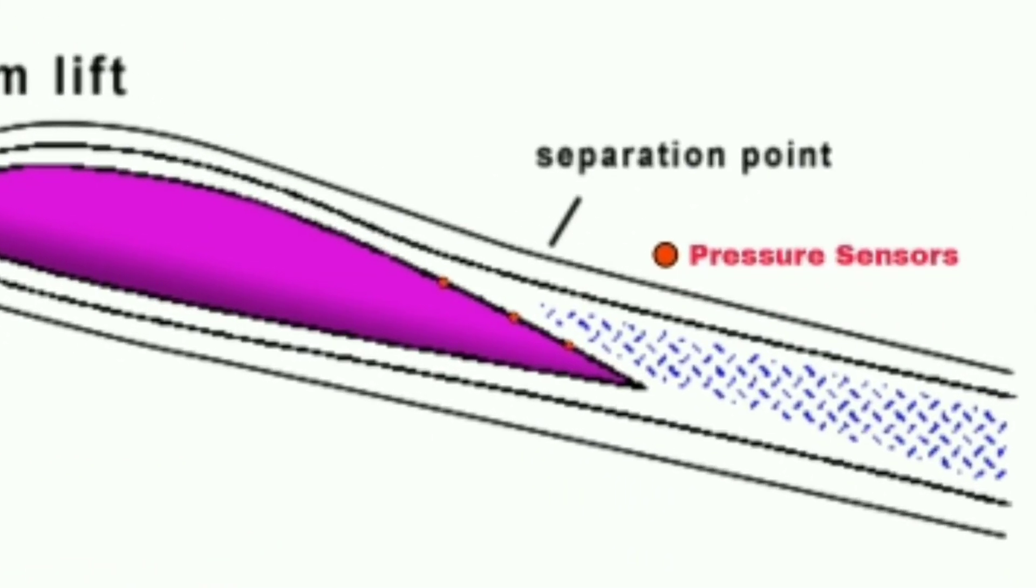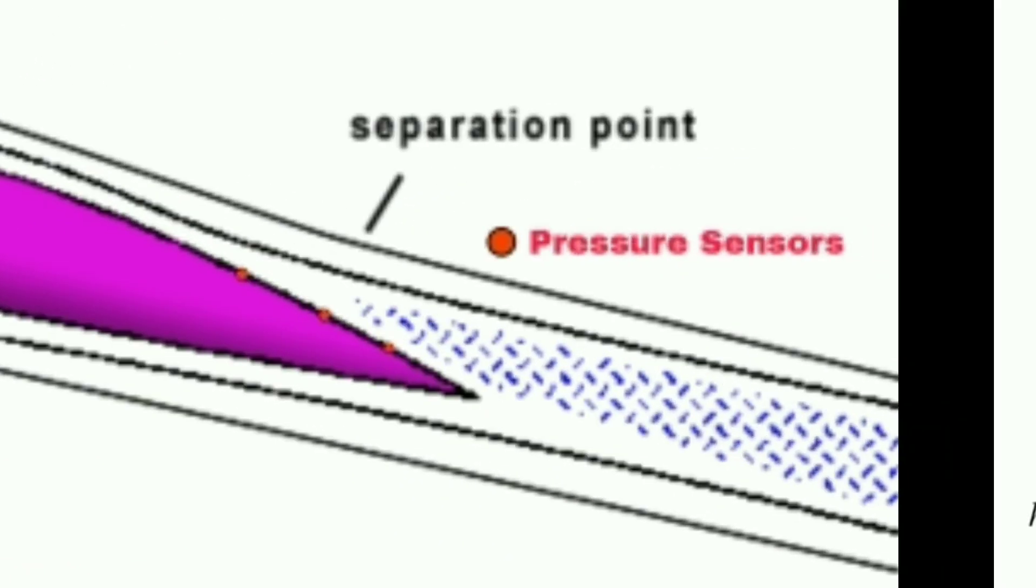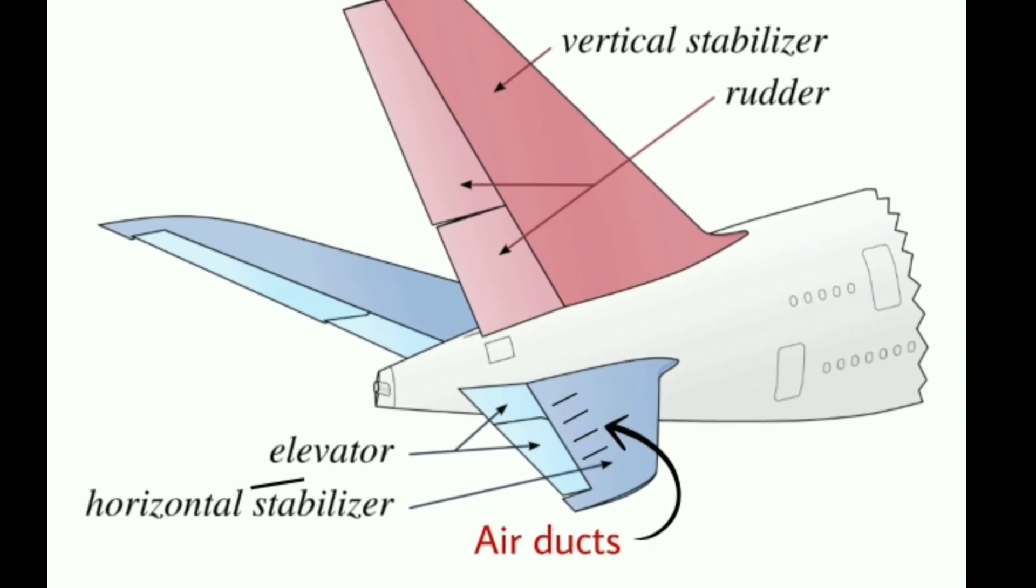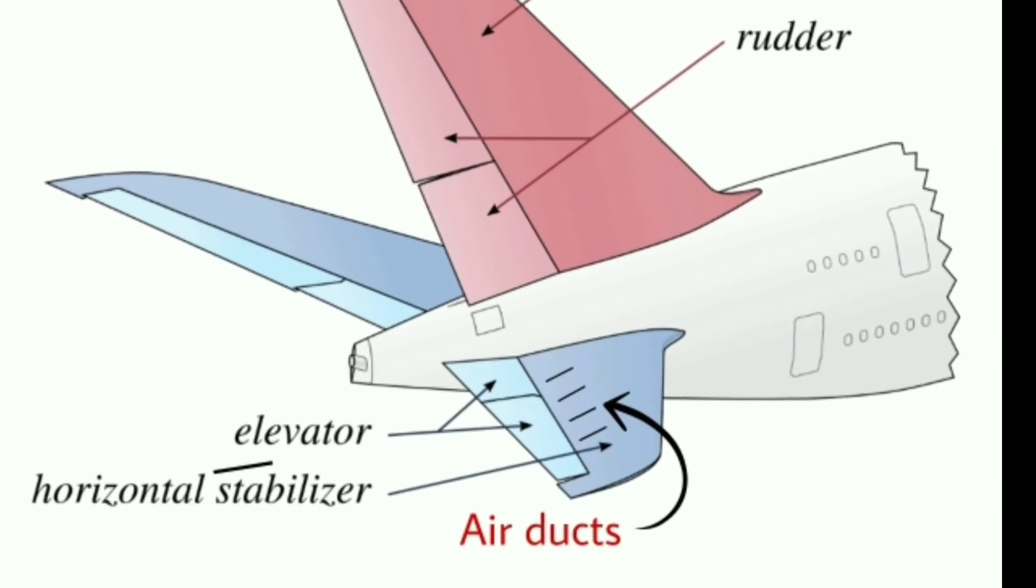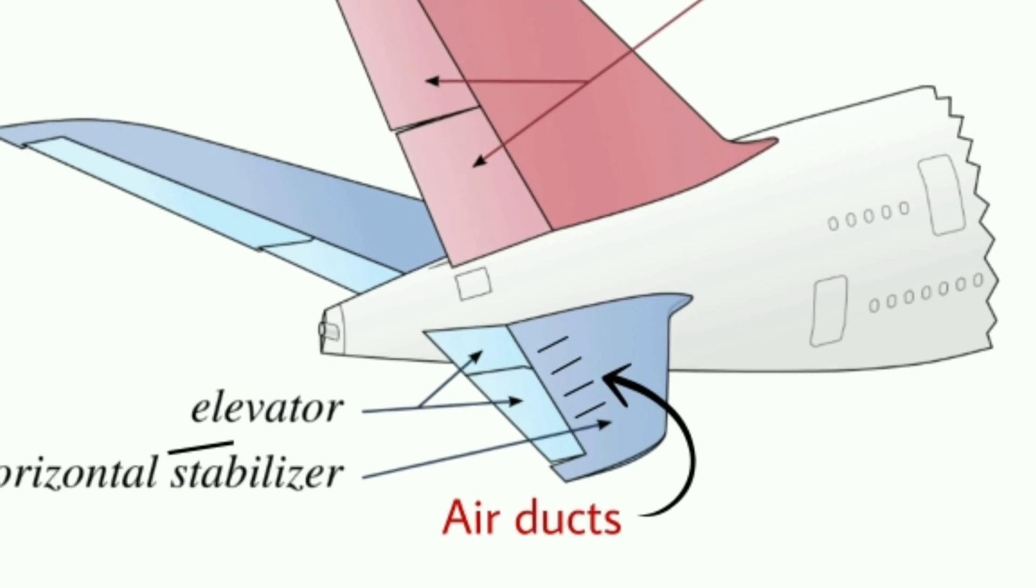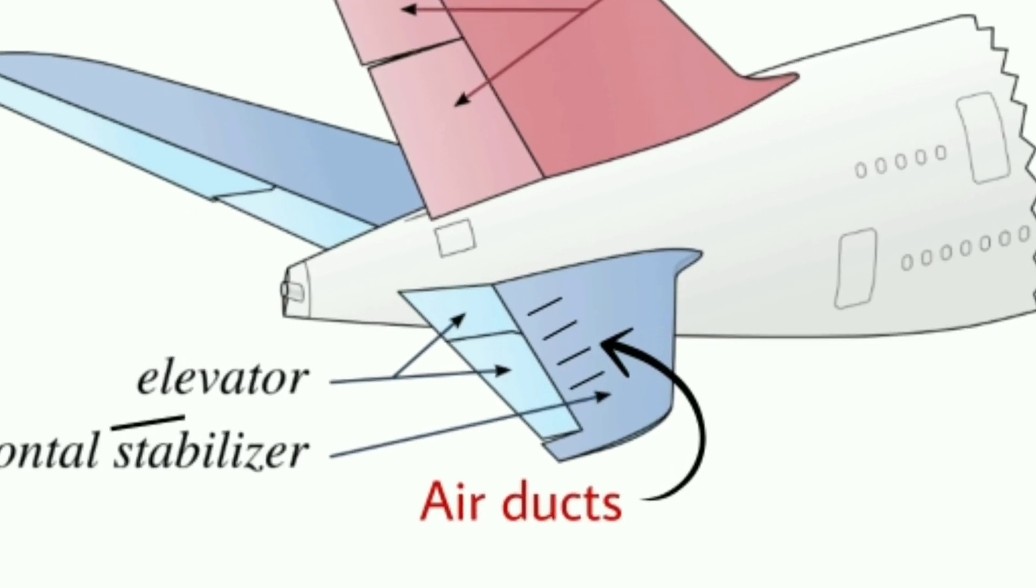MEMS pressure sensors on wing are small in size. They won't affect airflow much. Horizontal tail will have small air duct for creation of the forced flow. These ducts will also restrict the spanwise flow over horizontal tail and hence reducing induced drag.